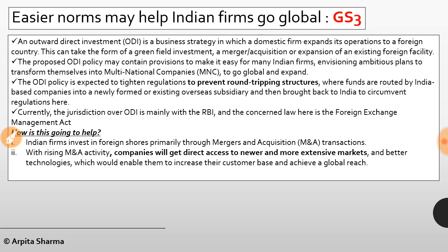Easier norms may help Indian firms go global. Outward Direct Investment (ODI) is a business strategy. The proposed outward direct investment policy may contain provisions to make it easy for many Indian firms to transform themselves into multinational companies, to go global and expand. Approval requirements and other norms would be simplified to encourage internationalization of Indian companies.